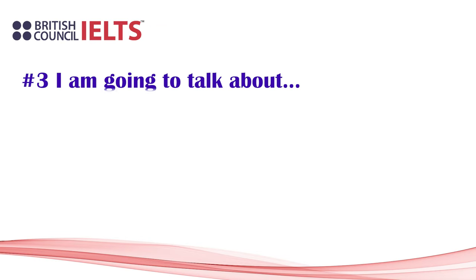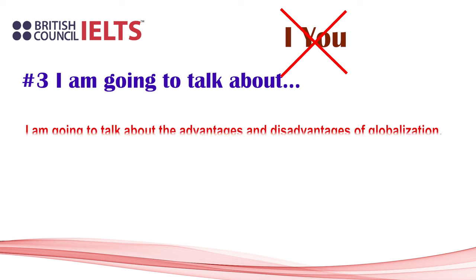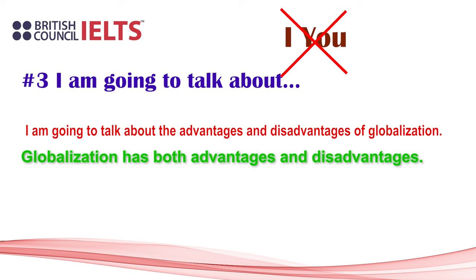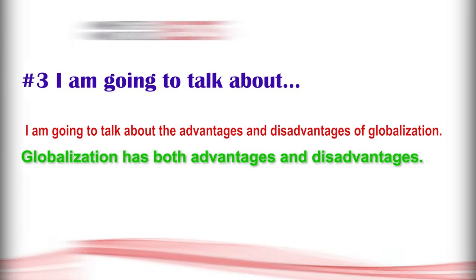The third phrase to avoid is 'I am going to talk about.' This is still very common. The problem with using 'I' and 'you' in your essay is that it makes your tone of argument more casual, and you don't want that — you want it to be academically formal. So instead of 'I am going to talk about the advantages and disadvantages of globalization,' say 'Globalization has both advantages and disadvantages,' which is more formal and sounds better.